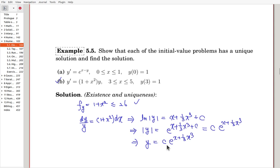Now, we have to decide the c by using the initial condition. So, at x equals 3, the value is 1, so here, 1 equals c times e to the, at x equals 3, 3 plus...